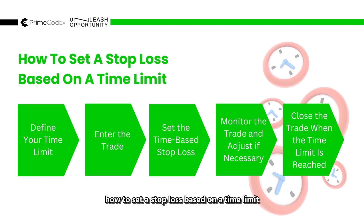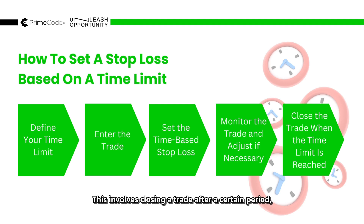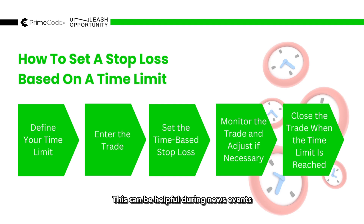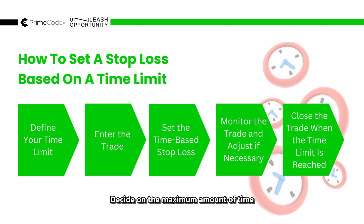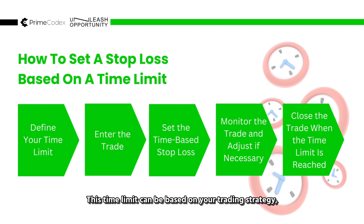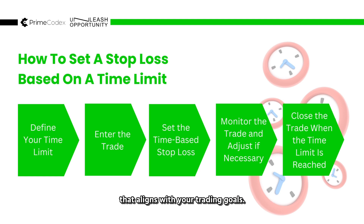How to set a stop loss based on a time limit. Some traders use time-based stop losses, which involves closing a trade after a certain period, even if it hasn't hit the stop loss or take profit. This can be helpful during news events when fast price movements can be erratic. First, define your time limit — decide on the maximum amount of time you are willing to let a trade run before closing it. This time limit can be based on your trading strategy, market conditions, or personal preference. For example, you might set a time limit of one day, one week, or any other time frame that aligns with your trading goals.